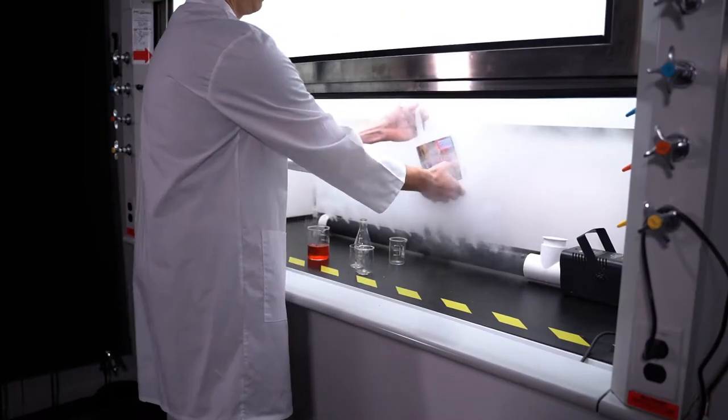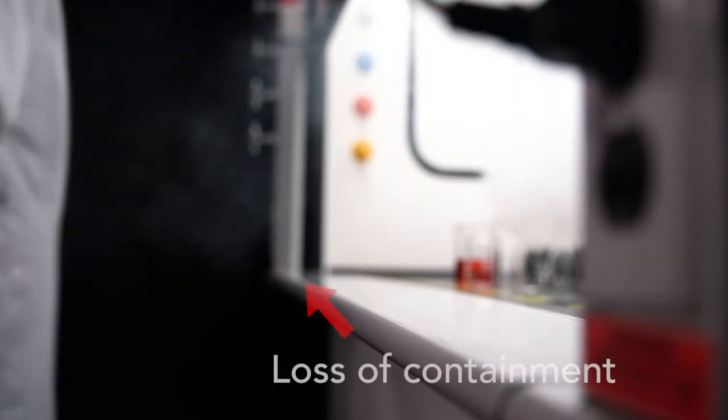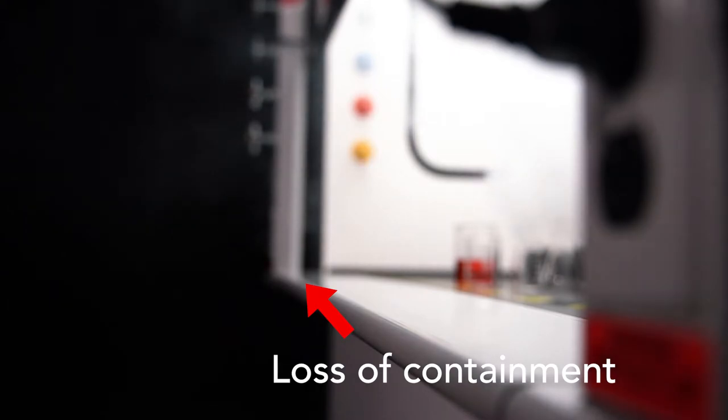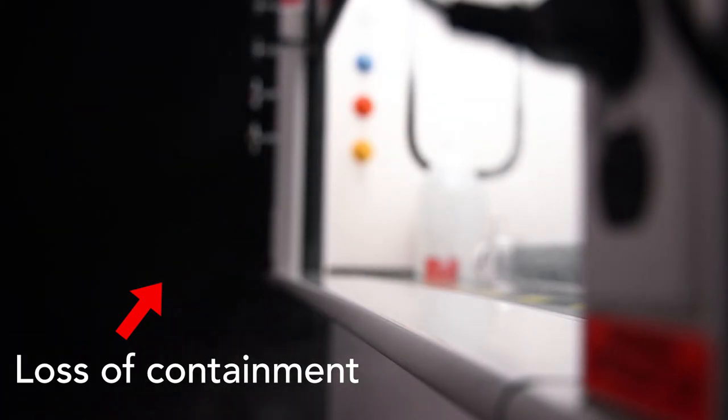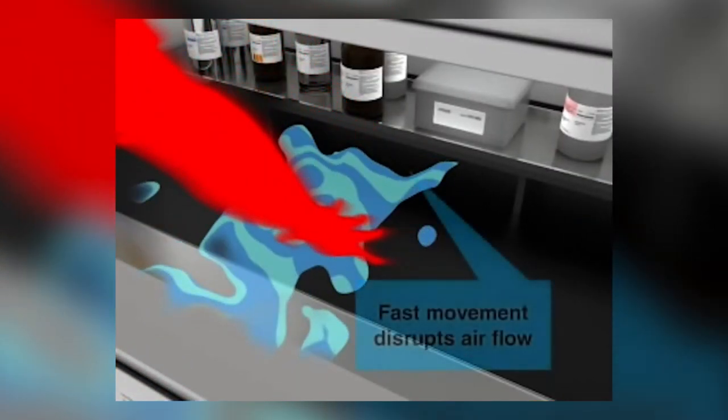Do not reach into the fume chamber and pull your arm out fast. Fast movement can pull air out of the fume chamber, as can user traffic in front of the hood. Always move slowly in and around the hood, and be cognizant of other air movements such as ceiling diffusers, fans, and open doors.